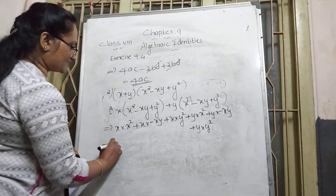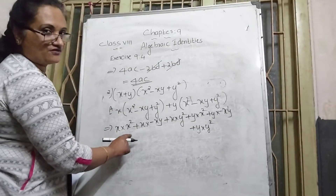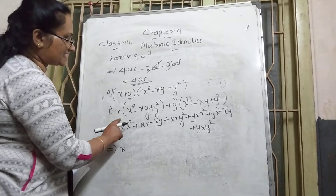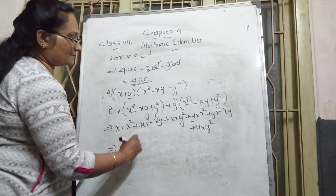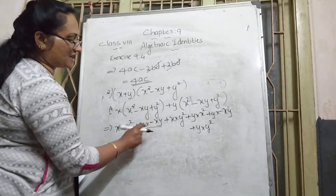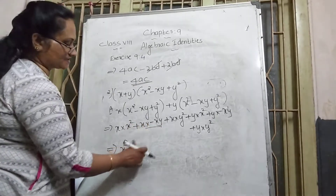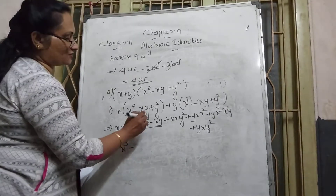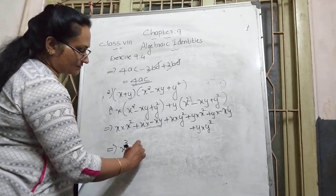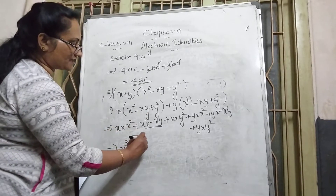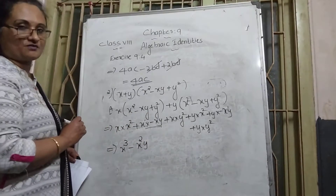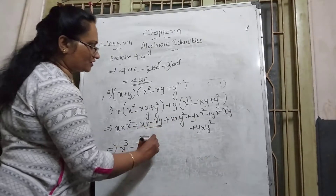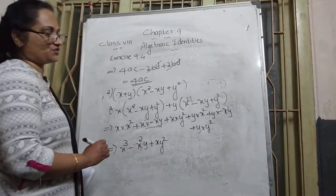After multiplying: both have the same variable so write variable once. For powers: x has power 1 and x² has power 2, so 1 + 2 = 3, giving x³. The next term: x into −xy — positive into negative gives negative. x × x gives x² (power 1 + 1 = 2), plus variable y.